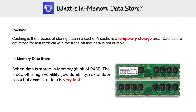To fully understand what ElastiCache is, we need to answer a couple of questions: what is caching, and what is an in-memory data store? Caching is the process of storing data in a cache, and a cache is a temporary storage area. Caches are optimized for fast retrieval, with the trade-off that the data is not durable.